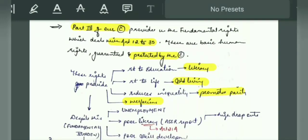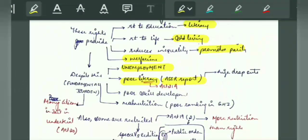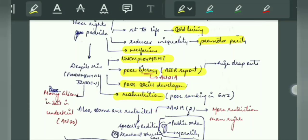Despite all these fundamental rights, we also have fundamental burdens. What are the burdens? Unemployment, poor literacy — quote the SR report here, which shows a high drop-out rate even after the right to education. Also, poor skill development, malnutrition. Our aim is that vulnerable sections have to take efforts. Articles 14, 15, and 16 are all about equality. The government makes efforts to bring them to parity and at par with others.